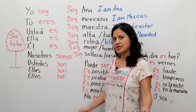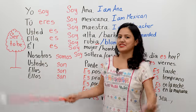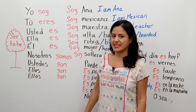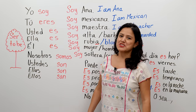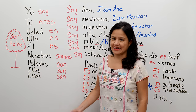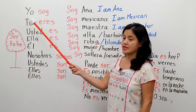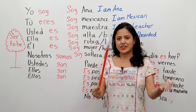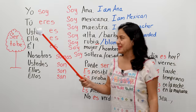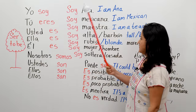The verb ser — how did I start the lesson? I said 'hola, soy Ana.' So you can say 'hola, soy,' and your name. Soy Ana.